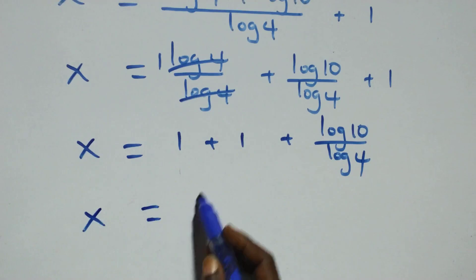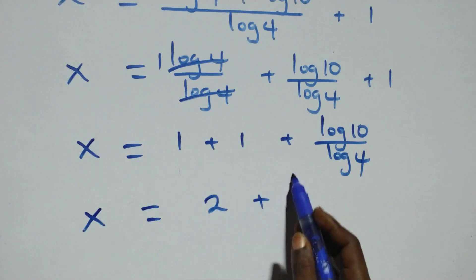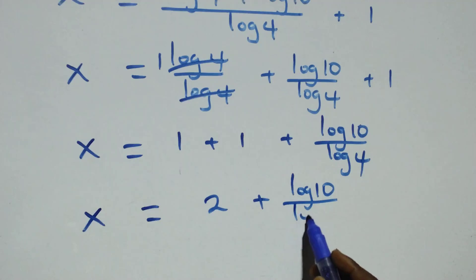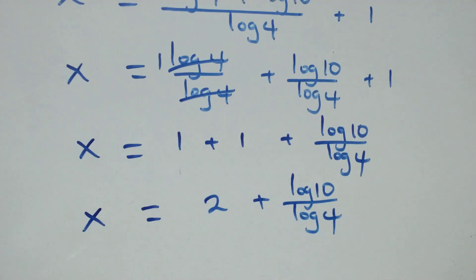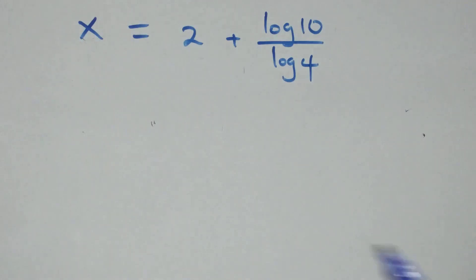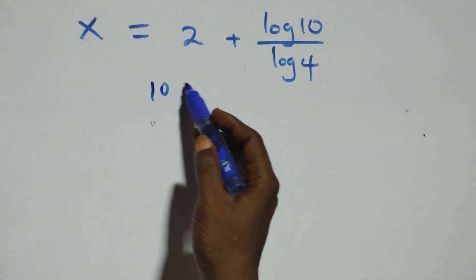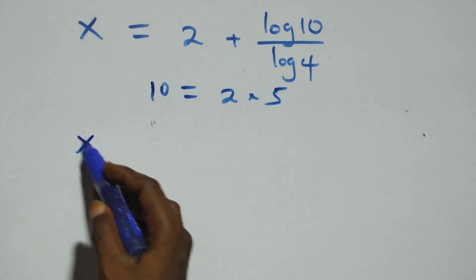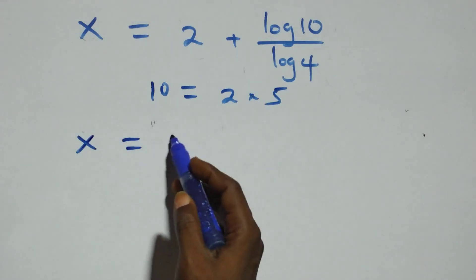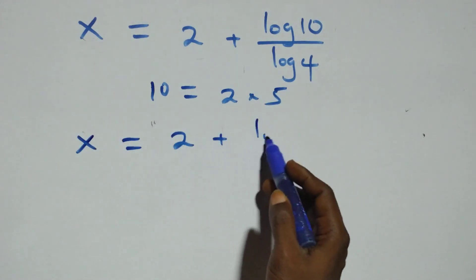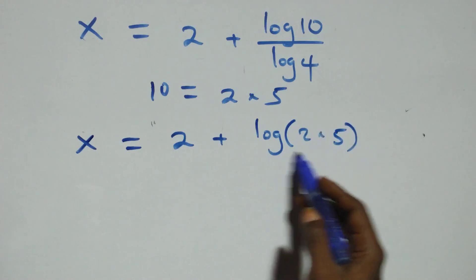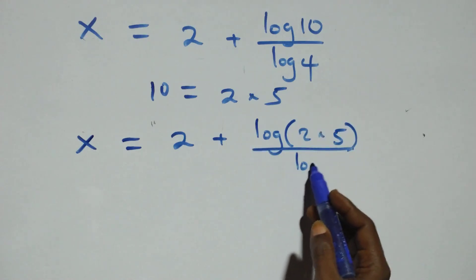Log 4 cancels each other, giving 1. So we have x equals to log 10 over log 4 plus 1 plus 1, which simplifies to x equals to log 10 over log 4.